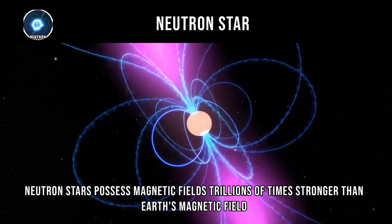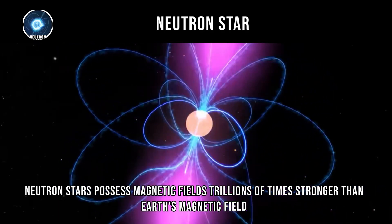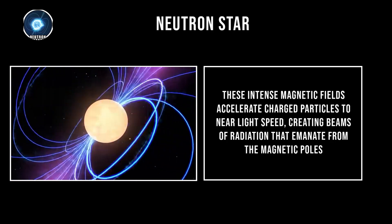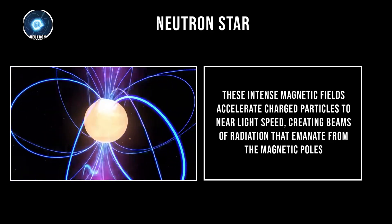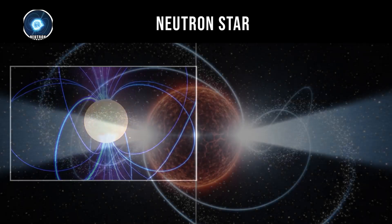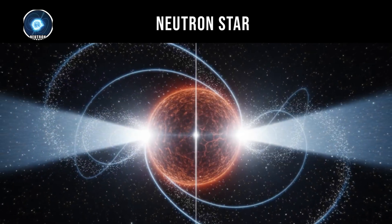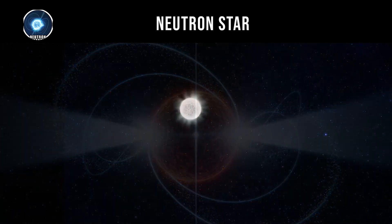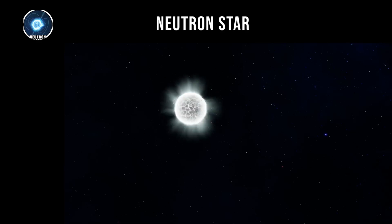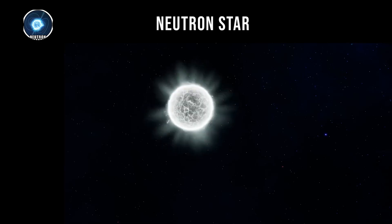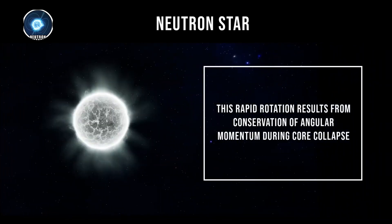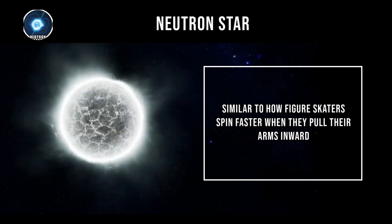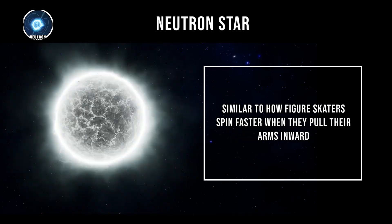Neutron stars possess magnetic fields trillions of times stronger than Earth's magnetic field. These intense magnetic fields accelerate charged particles to near-light speed, creating beams of radiation that emanate from the magnetic poles. The magnetic poles rarely align with the star's rotational axis, causing the radiation beams to sweep through space like lighthouse beams. Neutron stars rotate extremely rapidly, with periods ranging from milliseconds to several seconds — a result of conservation of angular momentum during core collapse, similar to how figure skaters spin faster when they pull their arms inward.